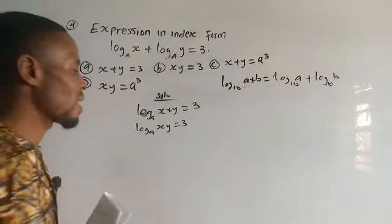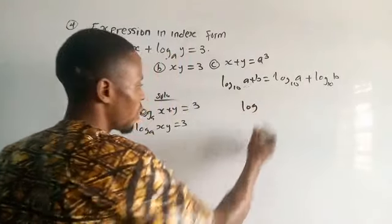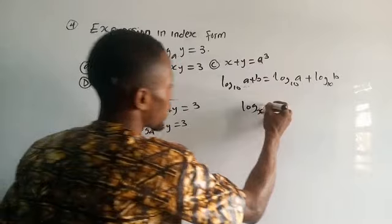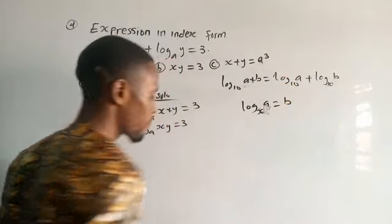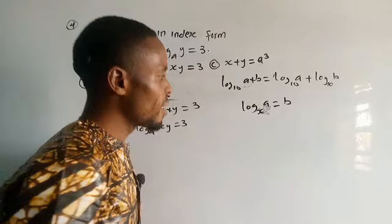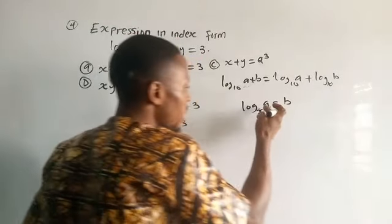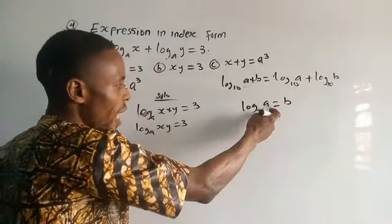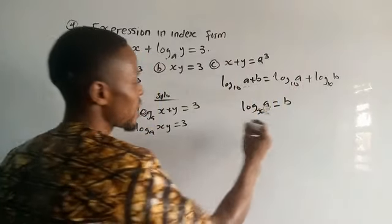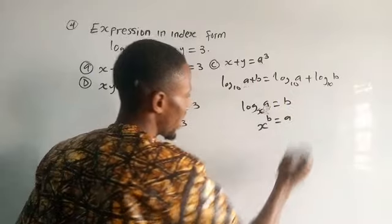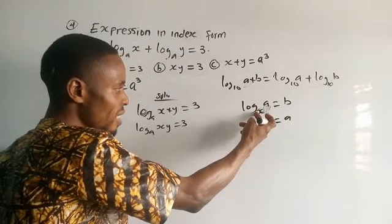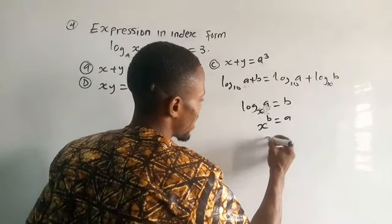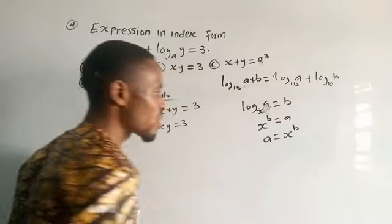There is a log rule that says: whenever you have log base s of a equals b, the base s raised to the power b gives you a. So s is the base, b is the index, and s raised to the power b equals a. Therefore, a equals s raised to the power b. Let's apply this law of logarithms to what we have here.